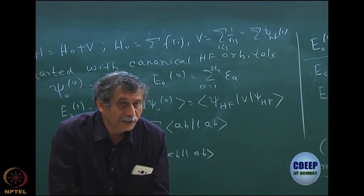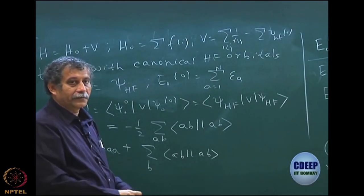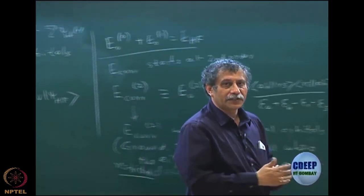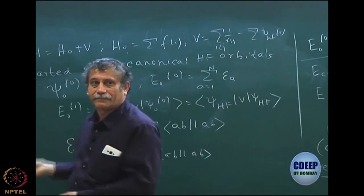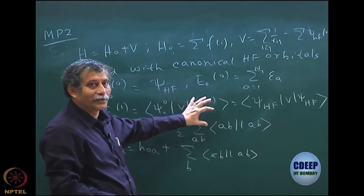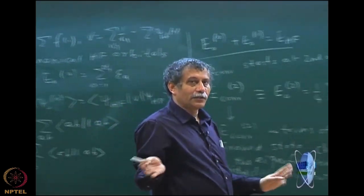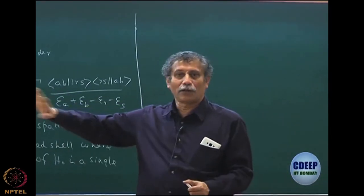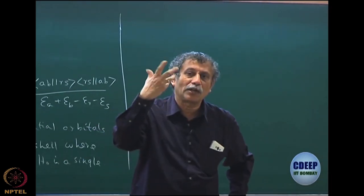For unrestricted Hartree-Fock, we will still have the same situation. First order anyway will get back the Hartree-Fock energy, because you just add up H naught and V — whatever is your psi-0,0, your E naught 0 is ⟨psi-0,0 | H naught | psi-0,0⟩ and E naught 1 is ⟨psi-0,0 | V | psi-0,0⟩. Adding them gives the reference energy. As long as you have this structure, you will always get first order giving you the Hartree-Fock or reference energy.